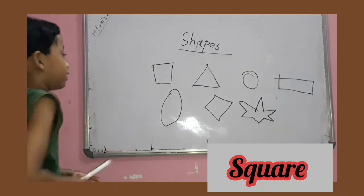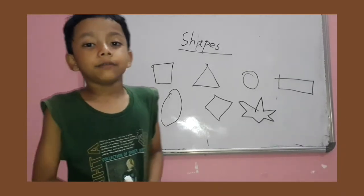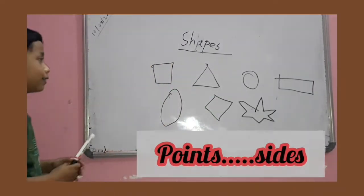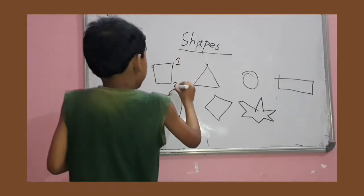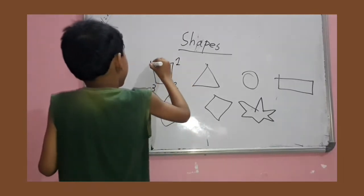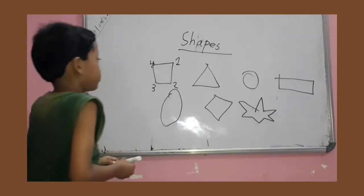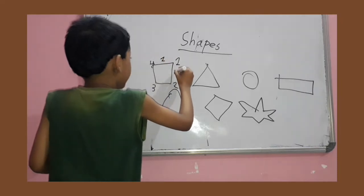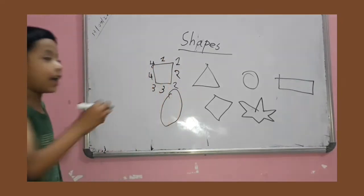This is a square. How many points in a square? There, look. One, two, three, four. Four sides, right? Four points and one, two, three, four. Four sides.